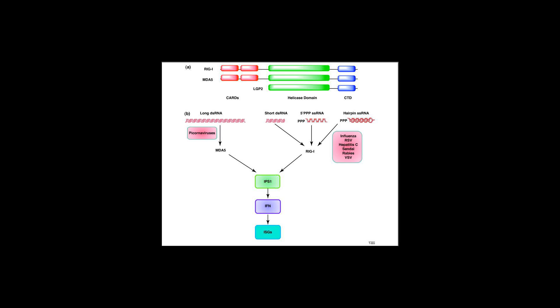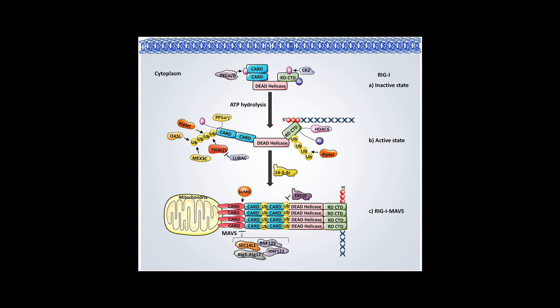RLRs work alongside another type of pattern recognition receptor, toll-like receptors (TLRs). Both types of receptor are used for sensing viral infection, initiating the innate immune response, and mediating the adaptive immune response.